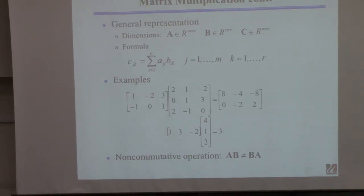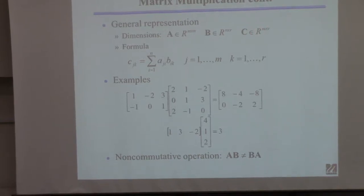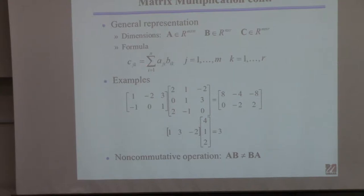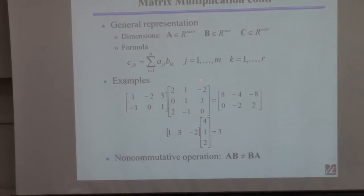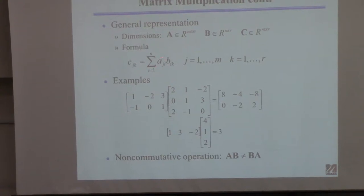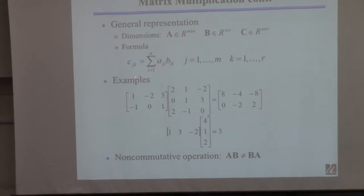To get the second row, I did the same thing using the second row instead. So the element 0 is that row times that column: minus 2 plus 2 equals 0. The formal definition says: if you want element C at position J, K, you take all elements in row J of A and multiply them times the corresponding elements in column K of B — that's a general definition applying to any dimensions.